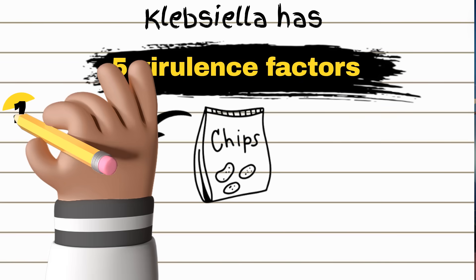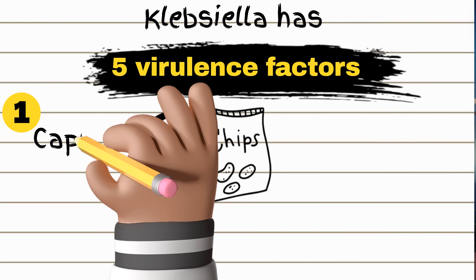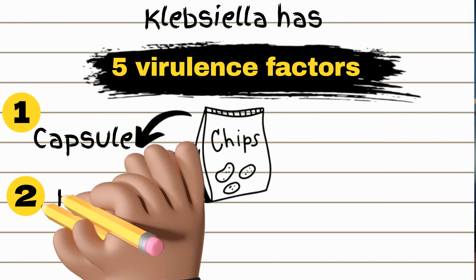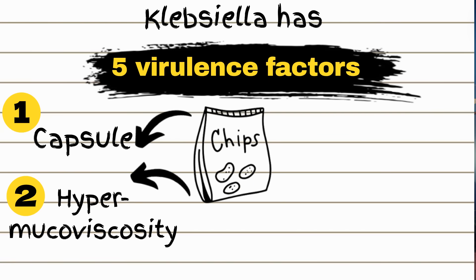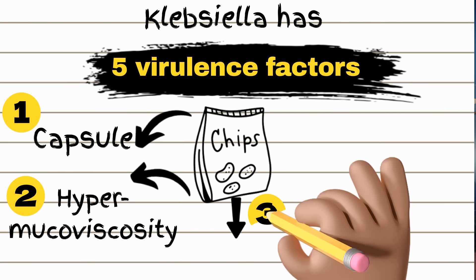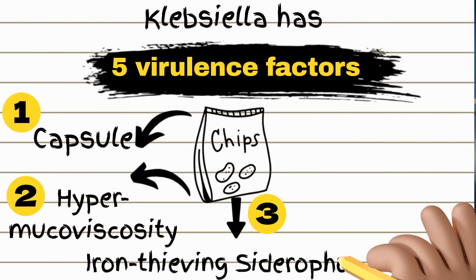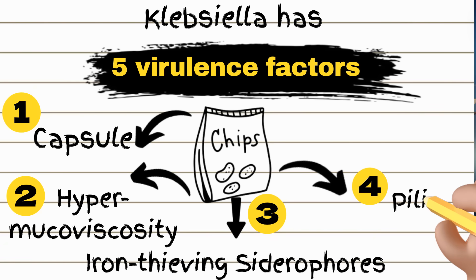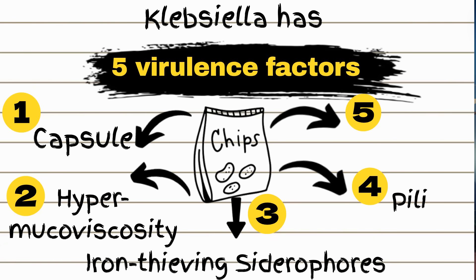CHIPS represents the five virulence factors that Klebsiella has: 1. Capsule. 2. Hypermucoviscosity. 3. Iron-thieving siderophores. 4. Pili. And 5. Structural lipopolysaccharide.